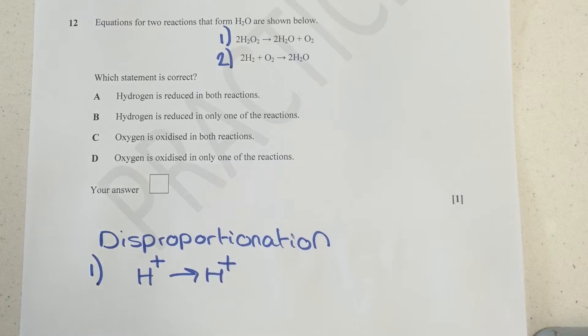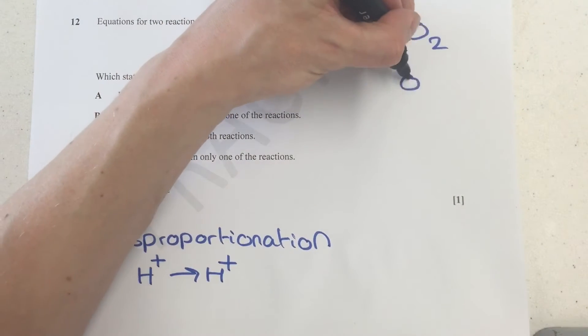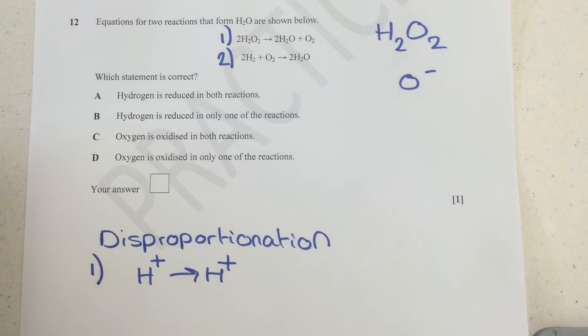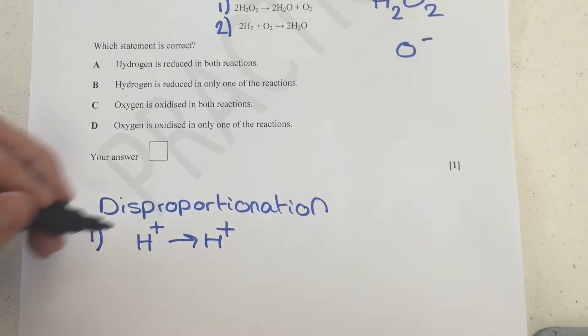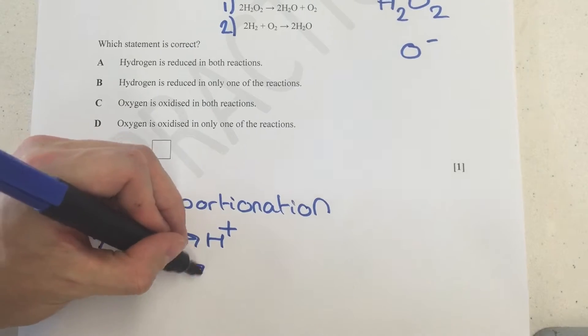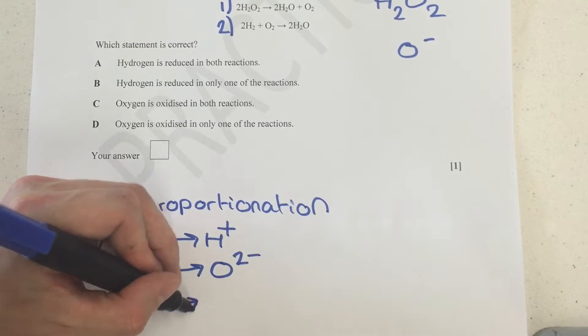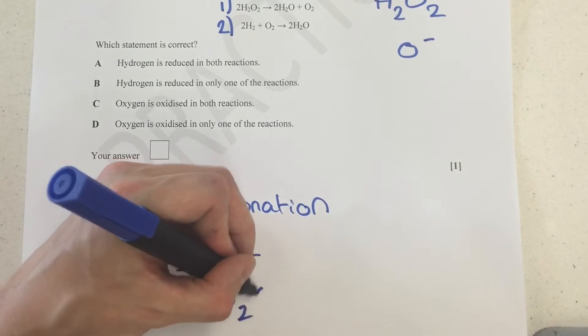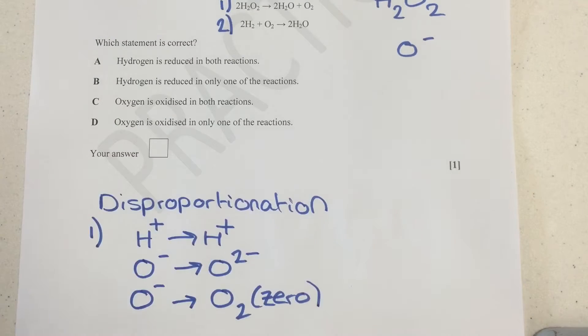What we also have then is if we look a little closely, we've got hydrogen peroxide. Now hydrogen peroxide contains the very rare oxygen with a one minus charge inside there. It's incredibly rare, but you do need to be aware of it. It is on your checklist before you go into the breadth or depth exams. Now what we can also see then is oxygen goes from one minus to two minus in H2O, and the oxygen also goes to zero in a molecule of O2.